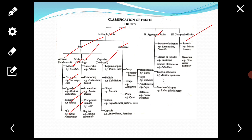Carcerulus: the fruit splits into many single seeded indehiscent mericarps. Example: Althea, Rosa, Ocimum.